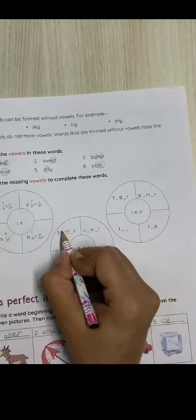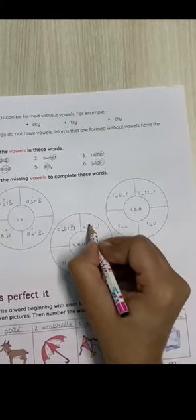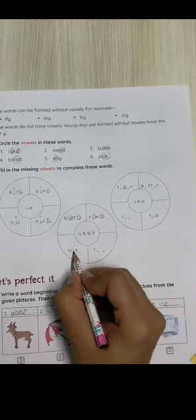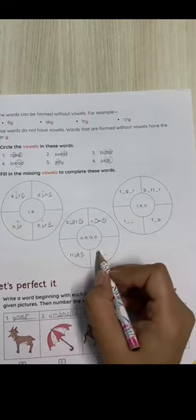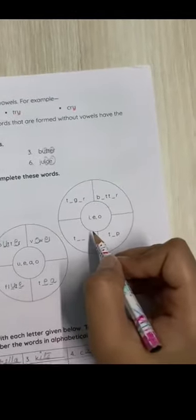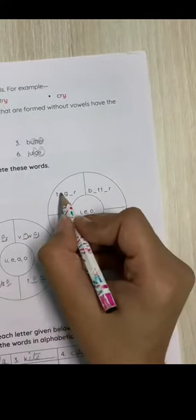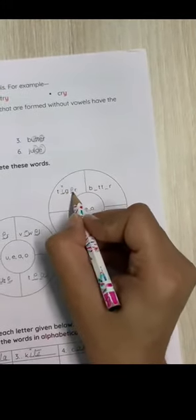B-U-double T-E-R butter, B-O-W-E-L vowel, F-L-U-T-E flute, T-E-A-T. Here we have to use I, E, and O. T-I-G-E-R tiger.